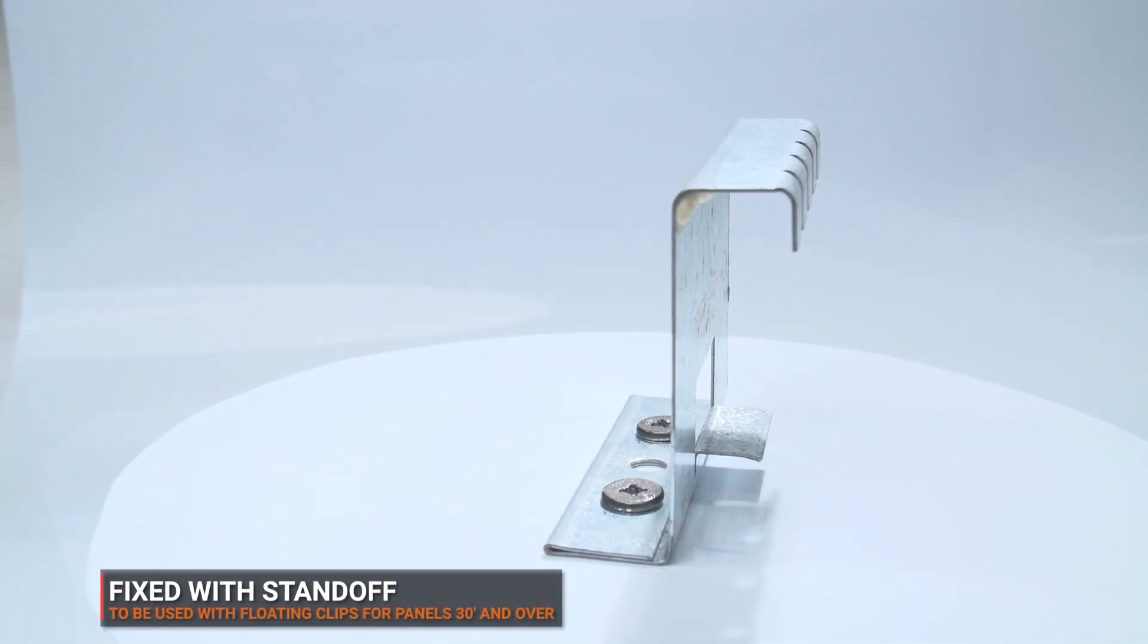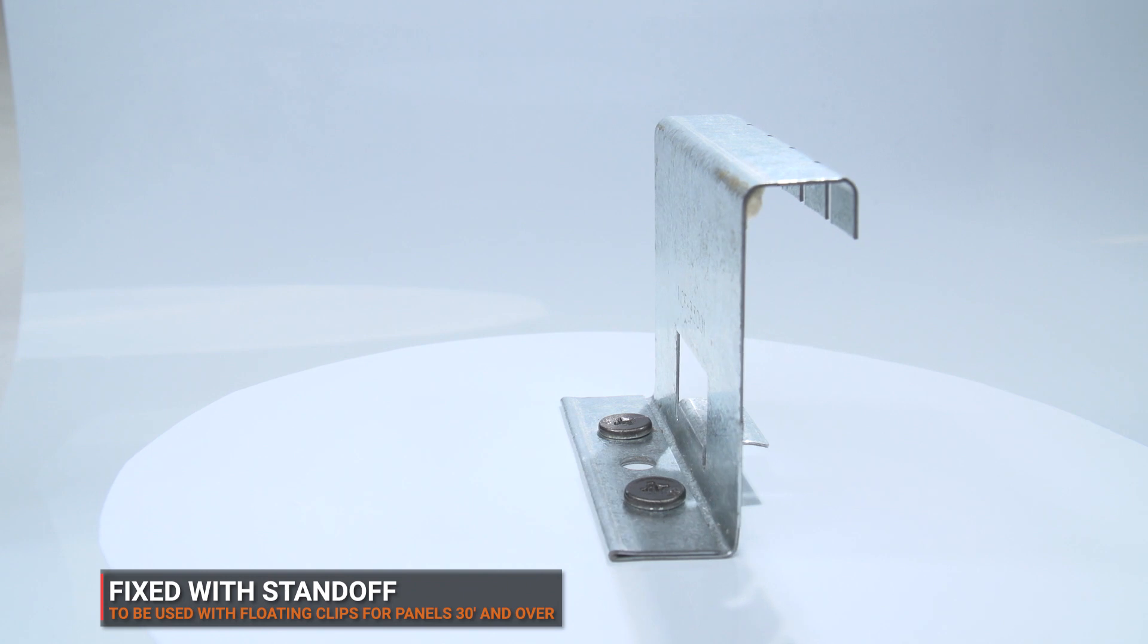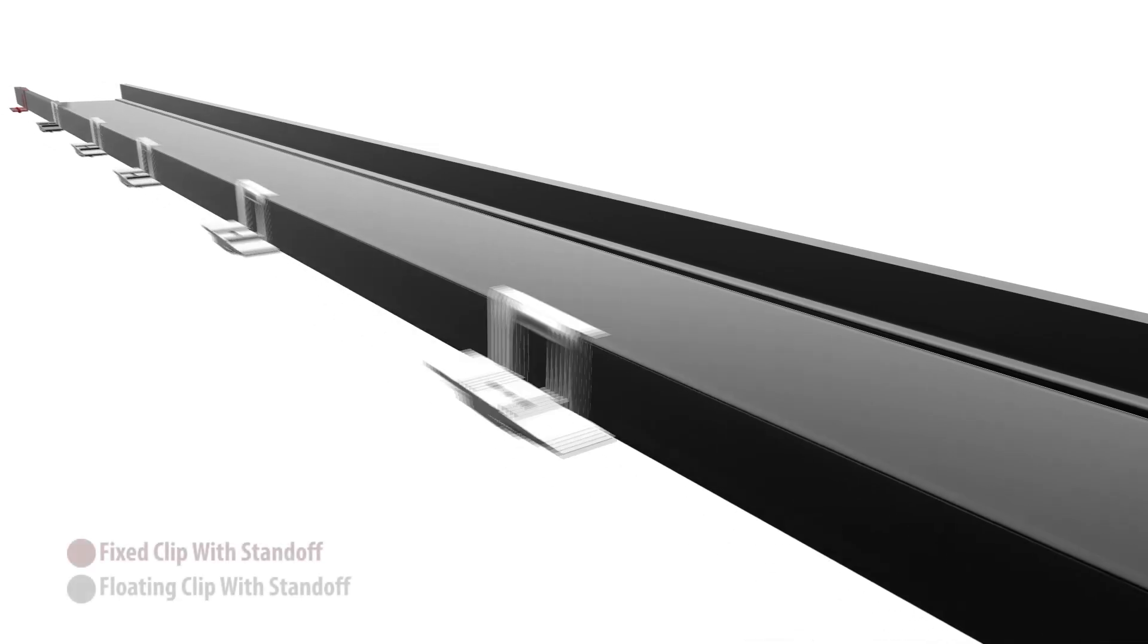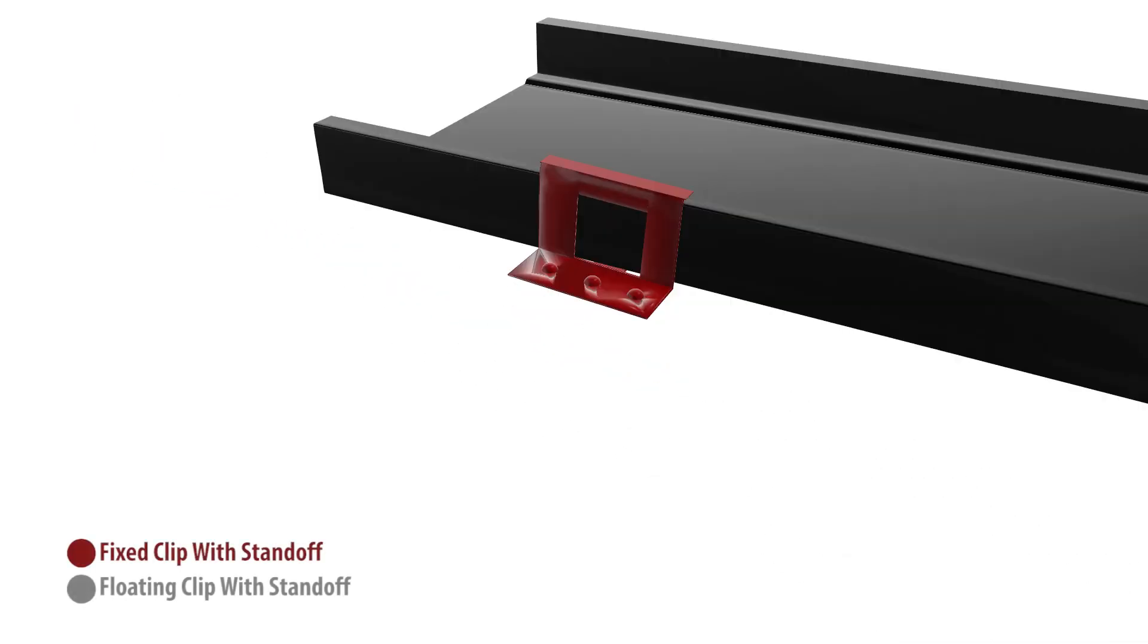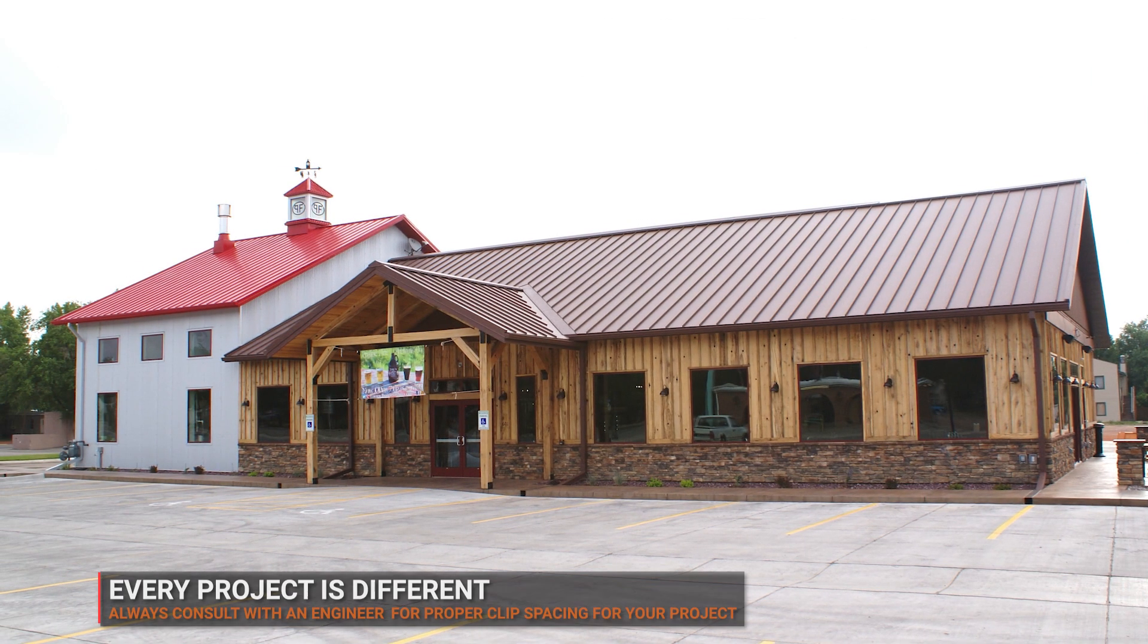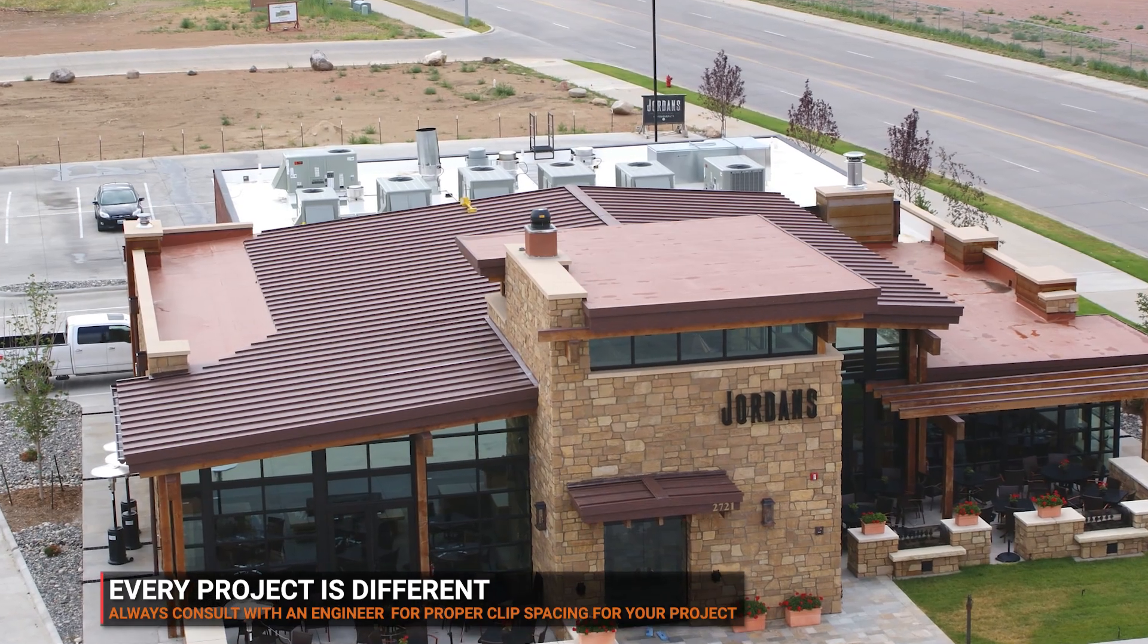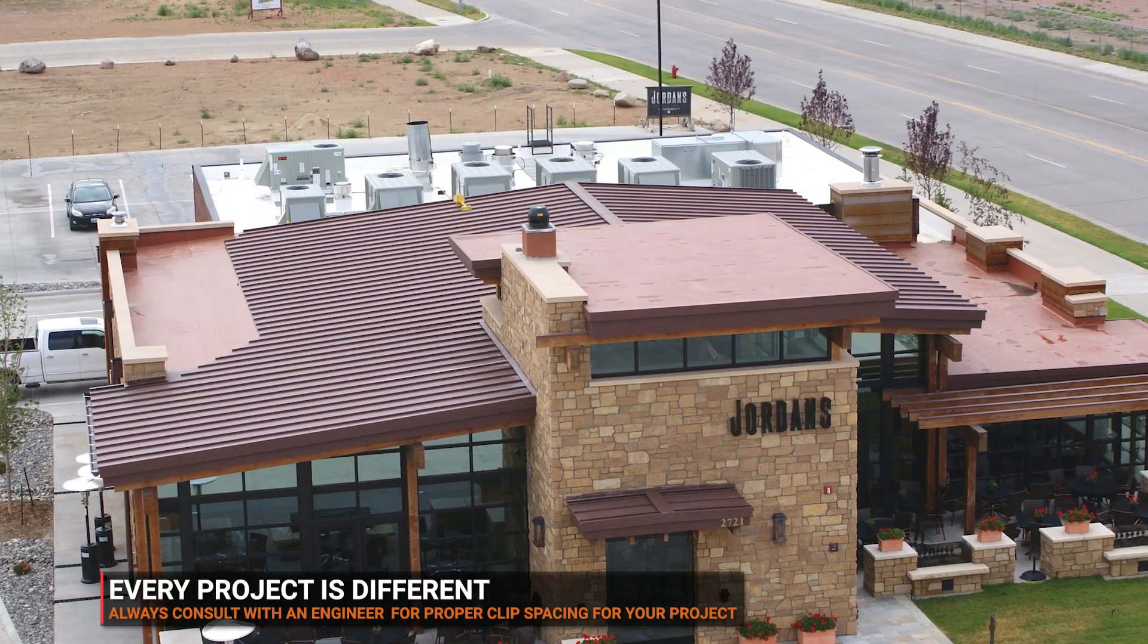Fixed clips with standoff are used in conjunction with floating clips with standoff. They are used to secure the panel and are generally placed as the last clip towards the ridge or end wall side of the panel. Additional fixed clips may be required, depending on your panel length. Always consult an engineer for exact clip quantity and spacing needed for your project.